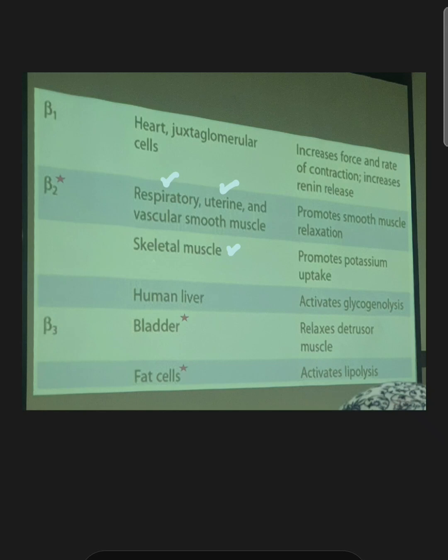Beta-2 acts on skeletal muscle by promoting potassium uptake and sequestration. In human liver, it causes glycogenolysis. Beta-3 acts on adipocytes, the fat cells, and promotes lipolysis and breakdown of fat. It acts on the bladder for relaxation of the detrusor muscle.